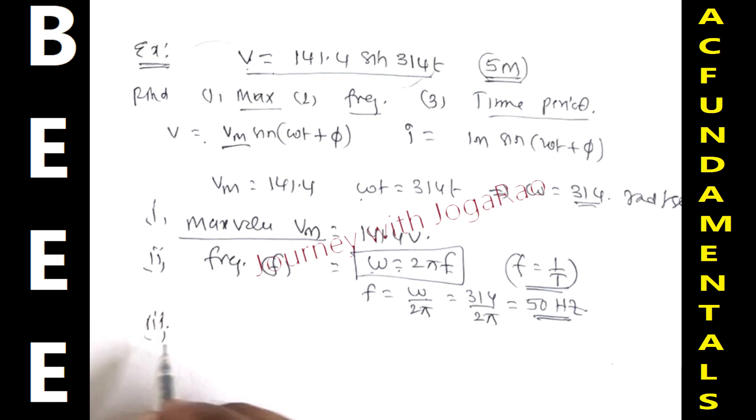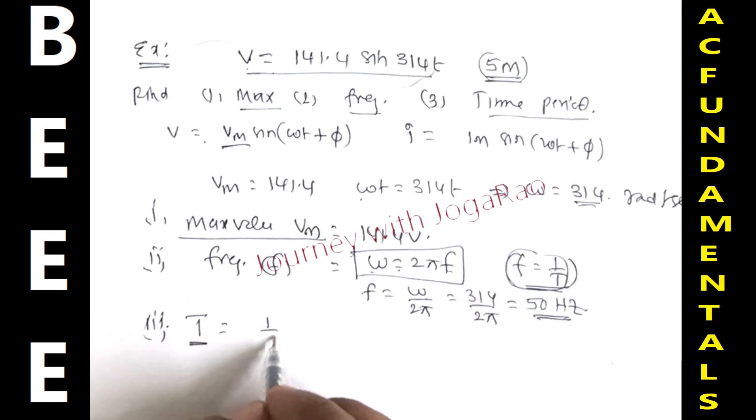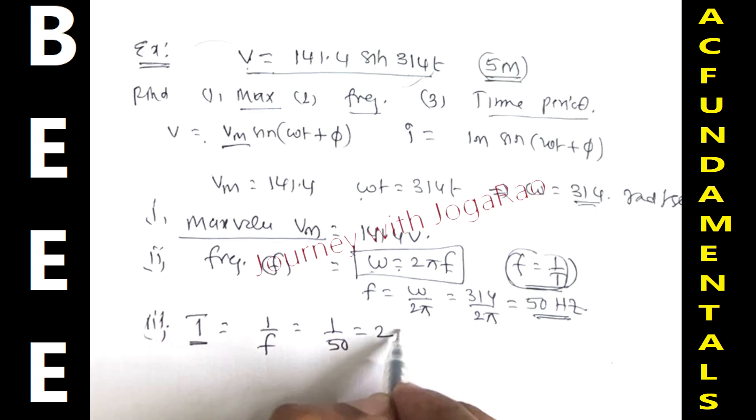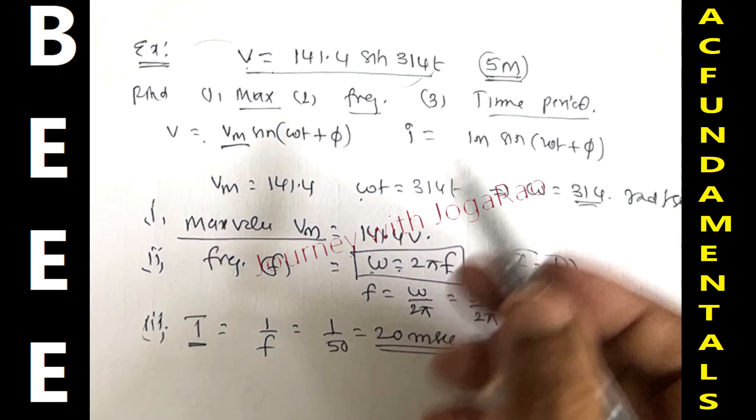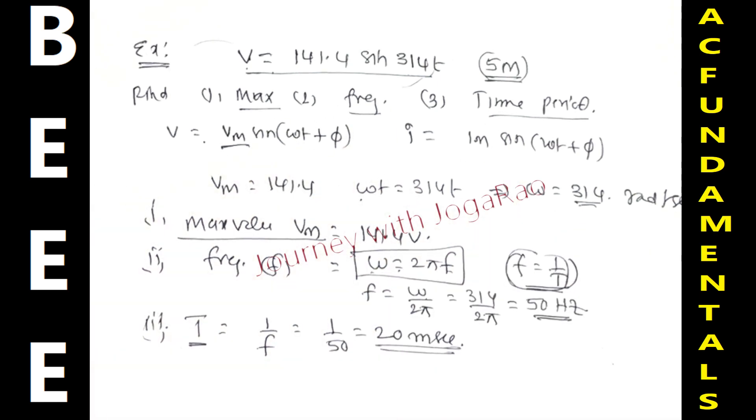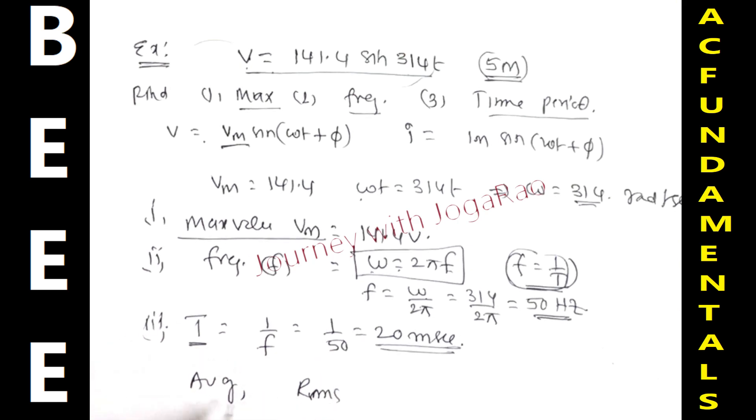Third, find out time period. Using the relation between frequency and time period, f equals 1 by T, so T is equal to 1 by f. Therefore T equals 1 by 50, which equals 20 milliseconds. So time period is 20 milliseconds.